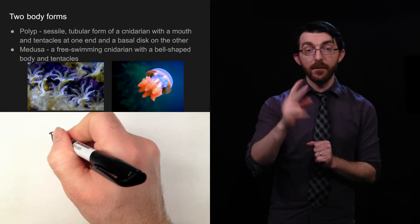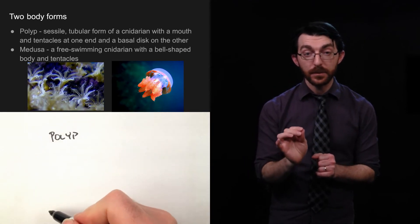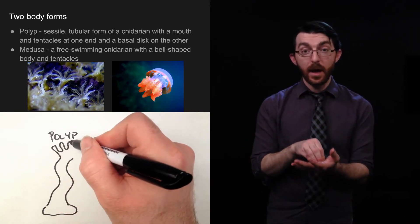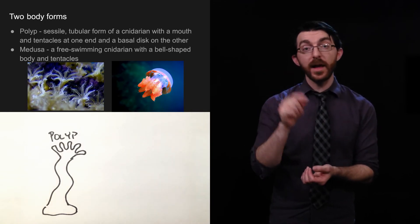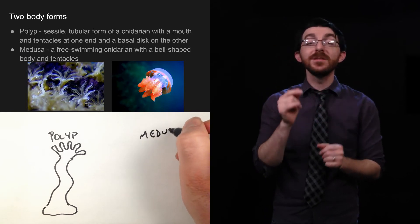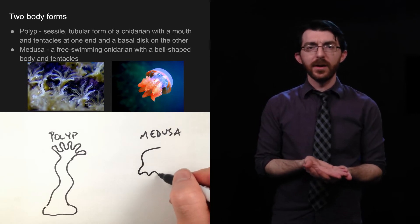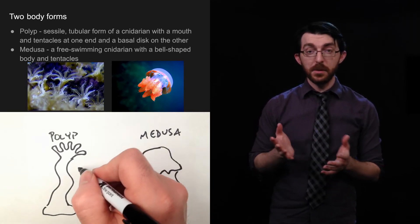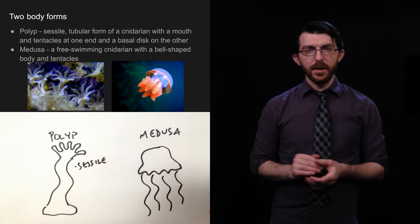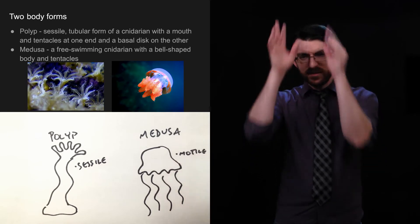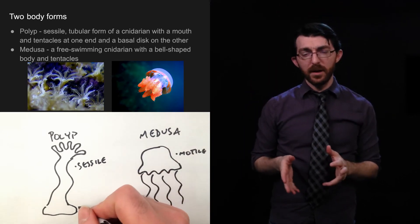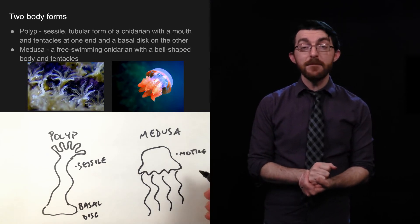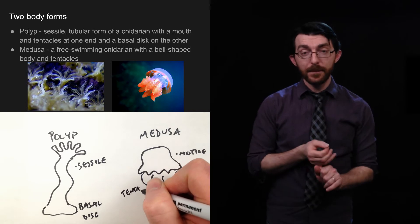So, there's two body forms. One is called a polyp that is a sessile, which means it's attached to a surface, tubular, so it has that radial symmetry, form of a cnidarian with a mouth and tentacles at one end. So, mouth, tentacles, and a basal disc on the other. That would be like a little coaster that it's sitting on. The other body form is called a medusa. Medusa, you may know from mythology. It was like the gorgon. She had the snakes for hair. So, it's referring to the shape that has all the tentacles coming off of it. And a medusa is a free-swimming cnidarian, so it's not sessile, it's not planted, with a bell-shaped body and tentacles. So, a polyp and a medusa.